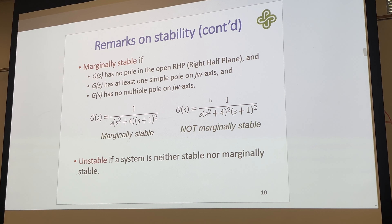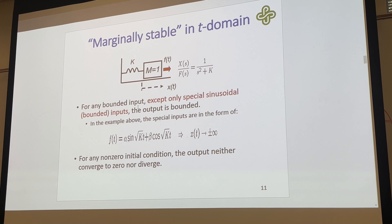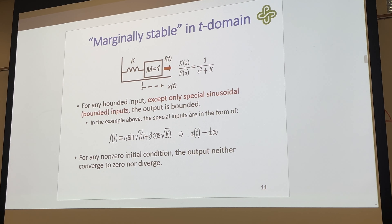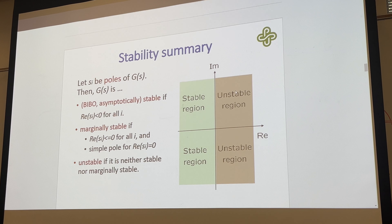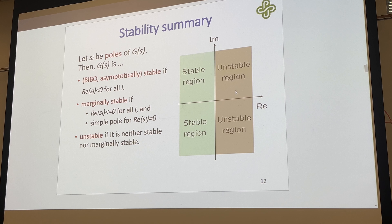An unstable system is neither stable nor marginally stable. This one would be considered unstable because of the multiple roots on the jω axis. But this one is marginally stable, which means we could stabilize it with feedback. For any bounded input — except some special sinusoidal inputs — the output is bounded in marginally stable conditions. For any non-zero initial condition, the output neither converges to zero nor diverges. Here's a summary: letting S sub i be the poles of the transfer function.